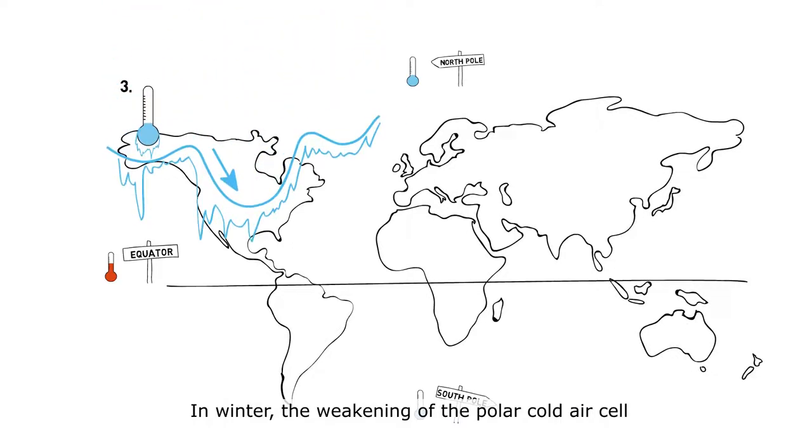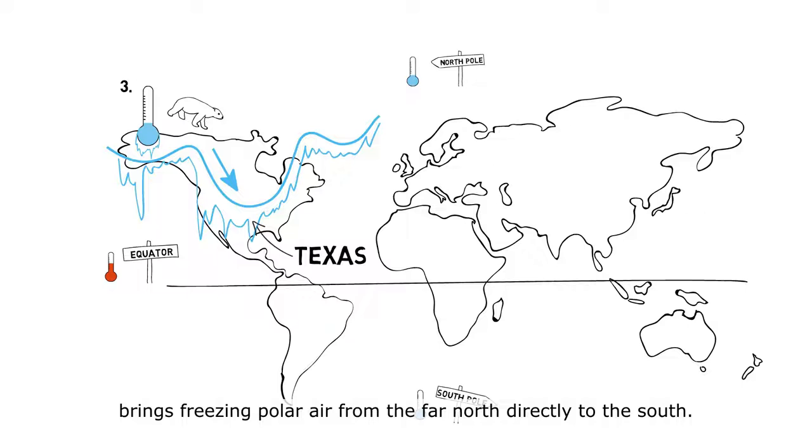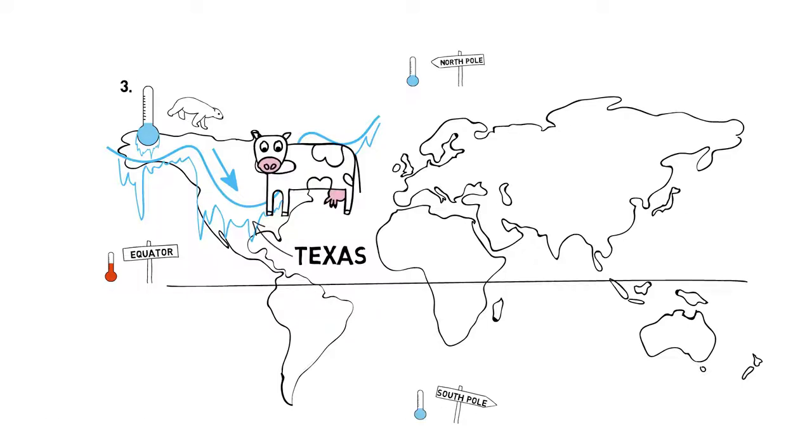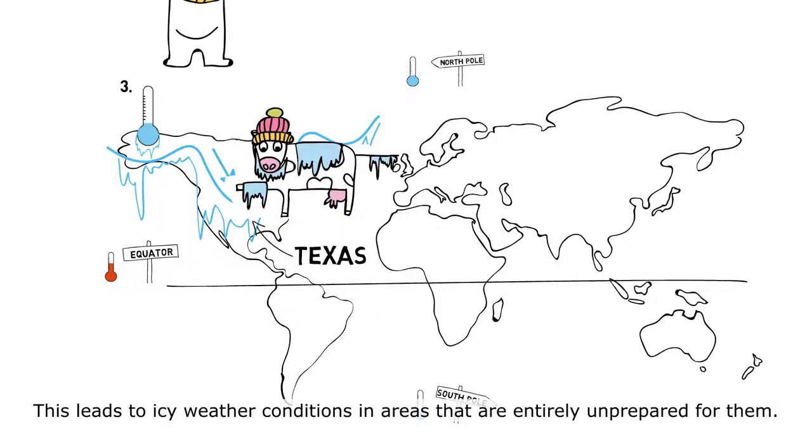In winter, the weakening of the polar cold air cell brings freezing polar air from the far north directly to the south. This leads to icy weather conditions in areas that are entirely unprepared for them.